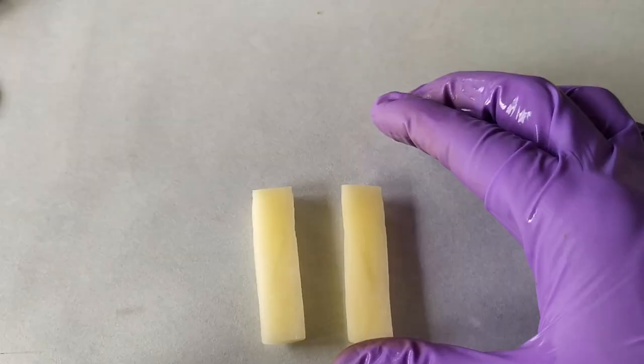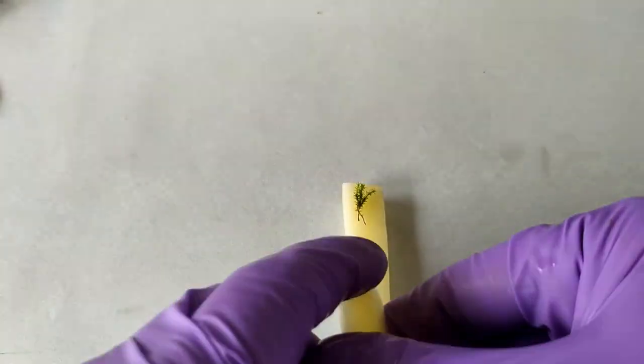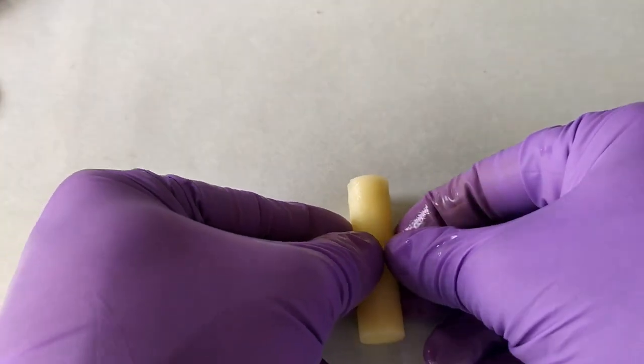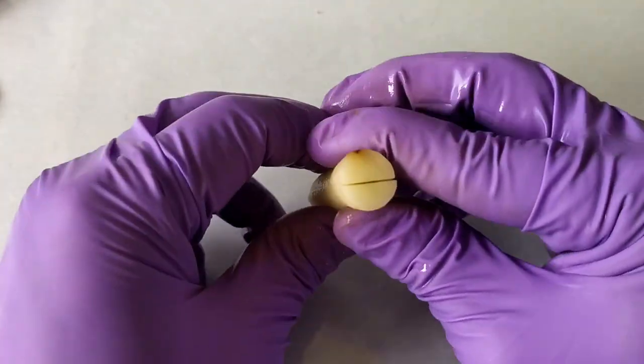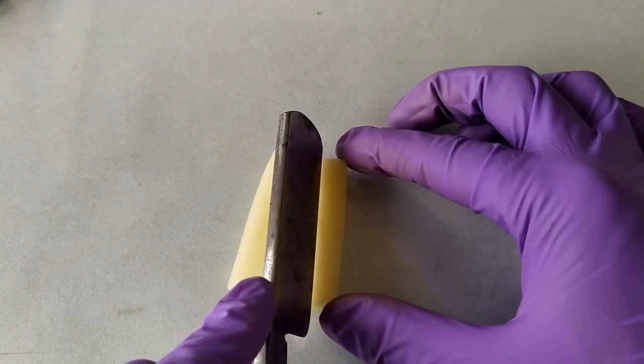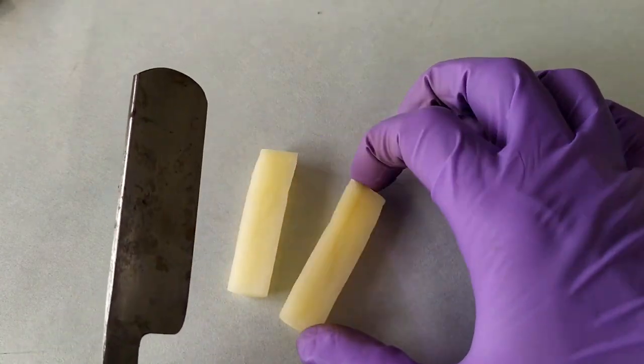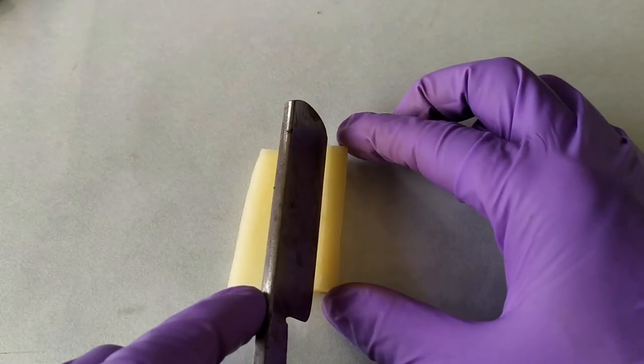Sandwich the plant material to be sectioned in between these halves and then proceed with the sectioning, using either the mid-air or submerged petri dish freehand technique as previously discussed. If the material is thick enough that it occupies room in between the pith halves, then cut out tiny V-shaped dents for an appropriate size at the center of one or both halves.